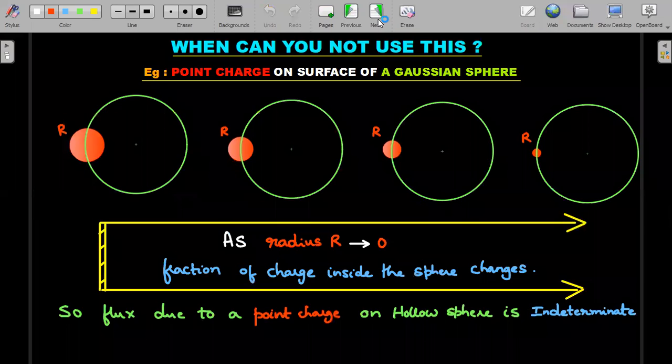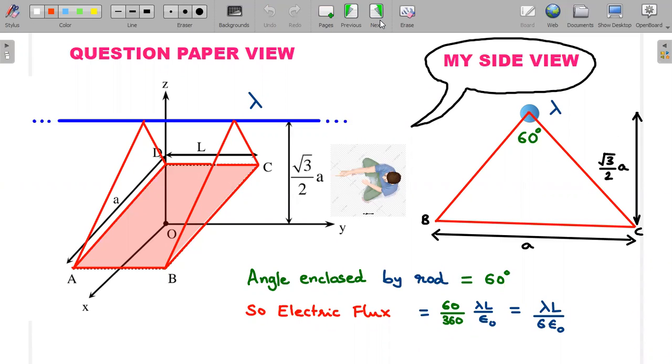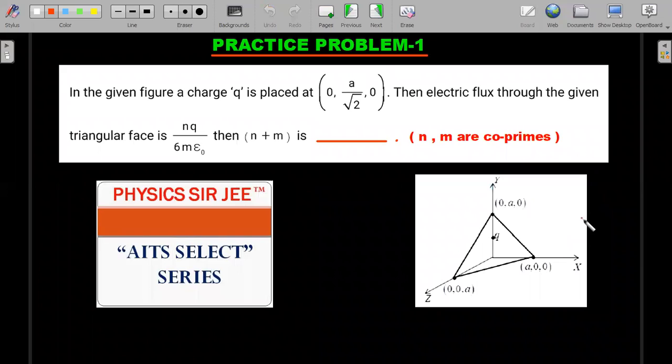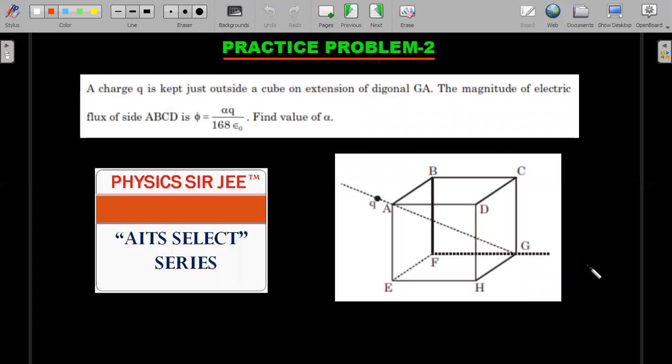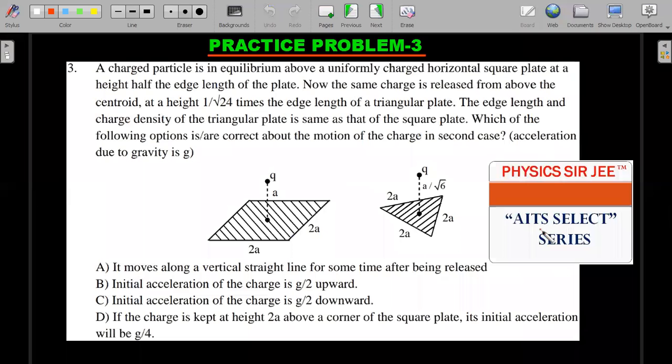Once we're done with this, let's move ahead for some practice problems which I'll give solutions for in the upcoming AITS Select series. There are five of them - patiently take snapshots and try them out. Some are now cakewalks with this concept, and some are slightly more difficult than the JEE Advanced problem. Here's the first one on electric flux.